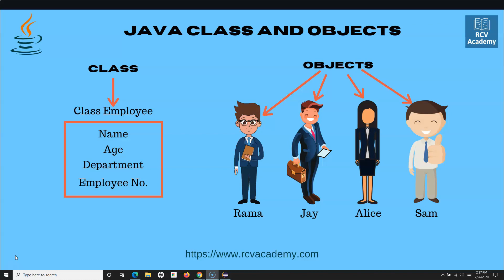We need to understand what exactly class and object means in object-oriented programming and how you can correlate it with real-time scenarios. If we talk about this employee example — class employee is essentially a blueprint or a template. Prior to software, you had paper forms, and whenever an employee was onboarded, they had to provide certain information: name, age, department, employee number — all filled into that physical form.